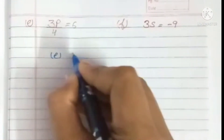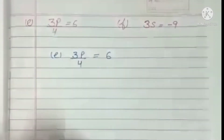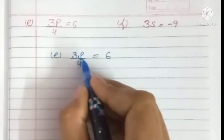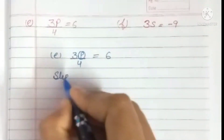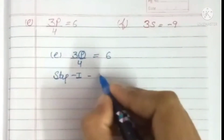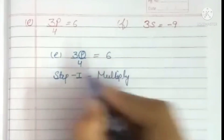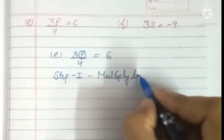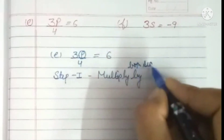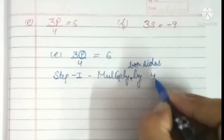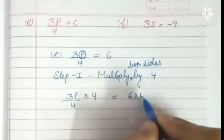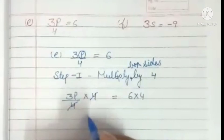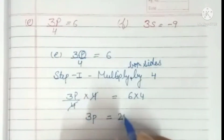The next part is 3p upon 4 is equal to 6. I hope you all are understanding. Again, here you need to find the value of p, so you will remove this 3 and this 4. We will use two steps. Step number 1: multiply both sides by 4, because 3p is divided by 4. So 3p upon 4 multiplied by 4 equals 6 multiplied by 4. This 4 and 4 is cancelled, giving 3p equals 24.